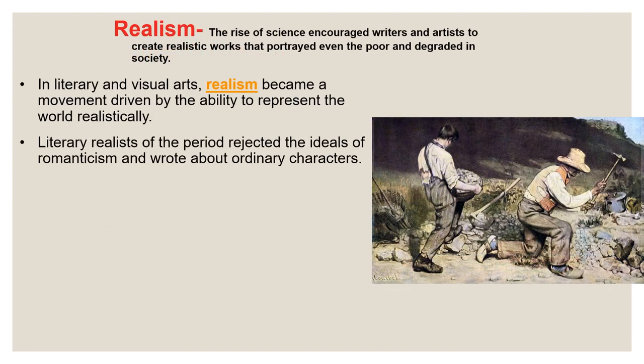In contrast to Romanticism, another movement called Realism emerged. Realist artists tried to portray things as they realistically saw them, rather than things from imagination or emotion like the Romantics did. The rise of the new science with the Second Industrial Revolution encouraged writers and artists to create realistic works, more so as we get to the end of the 19th century. It's like a pendulum swinging back and forth between different movements.